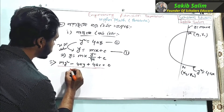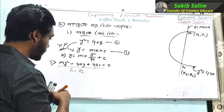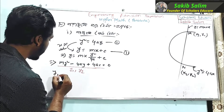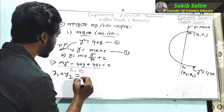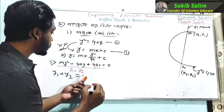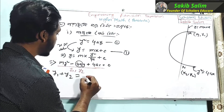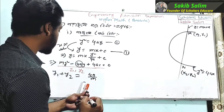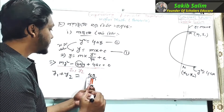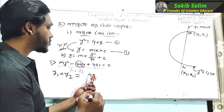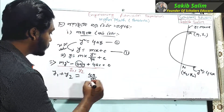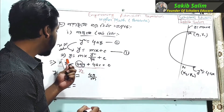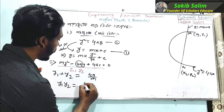Y is equal to 2a. After that, you can find y1 and y2. y1 plus y2 is equal to minus b divided by a, which is equal to 4a divided by m. y1 times y2 is equal to c divided by a.